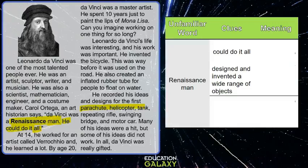Leonardo da Vinci was a man who could do so much. So we get a meaning of the word, which is a person who has deep knowledge of more than one field. It is because he could do so much and design so much that he had knowledge of more than one field. Leonardo da Vinci was a renaissance man.